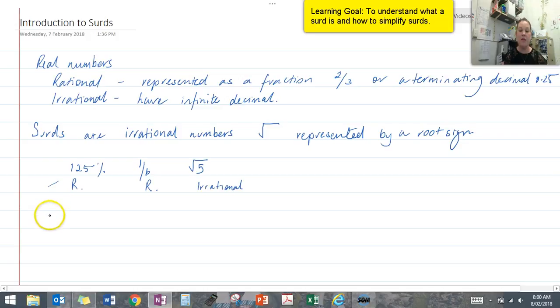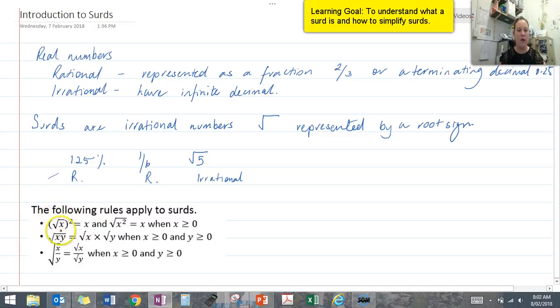Okay, now when we're dealing with surds, there are a number of rules that we do need to consider. The first rule is that when we square a square root, we get the value that's underneath the square root. If the value in the square root is squared, then we get that value also, and that's when any of our values are greater than or equal to zero.